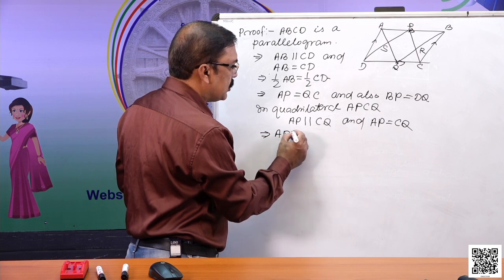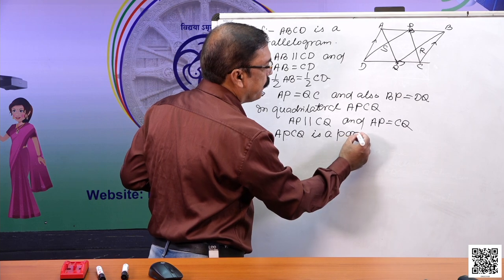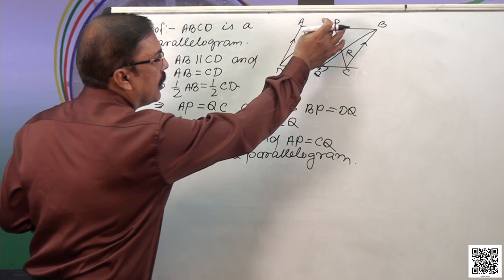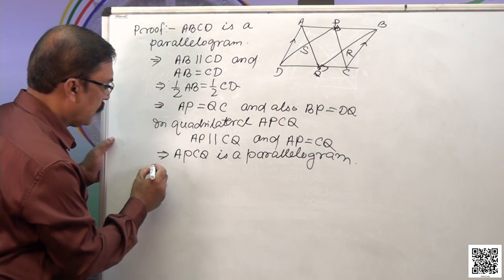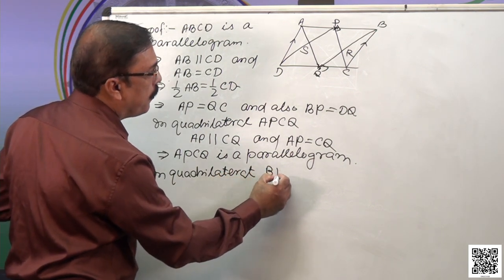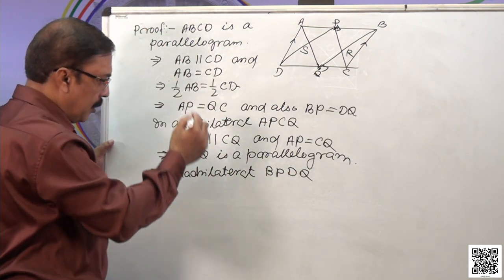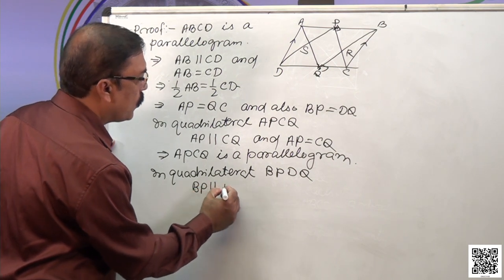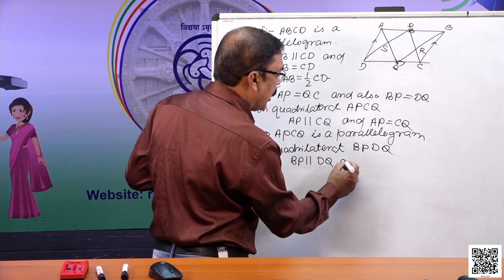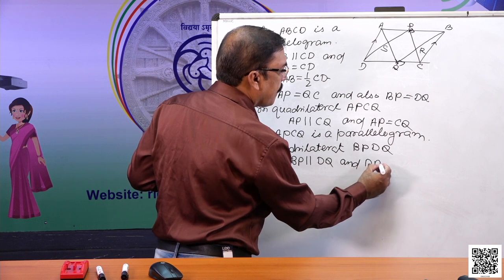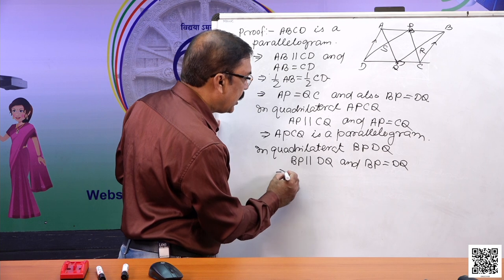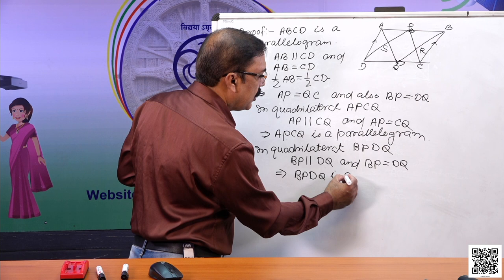Again, in the other quadrilateral BPDQ: BP is parallel to DQ as parts of AB and CD, which are parallel. We also proved that BP is equal to DQ, since BP is half of AB and DQ is half of CD. As one pair of opposite sides are equal and parallel, BPDQ is a parallelogram.